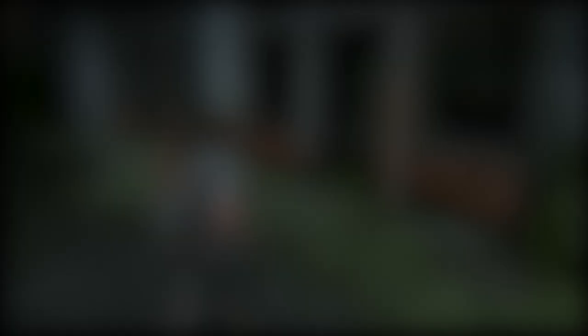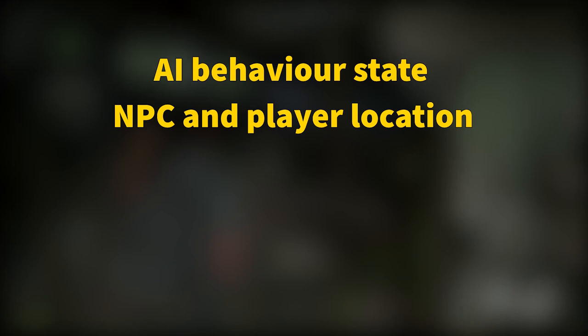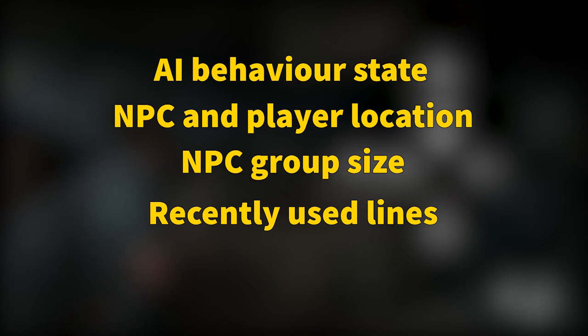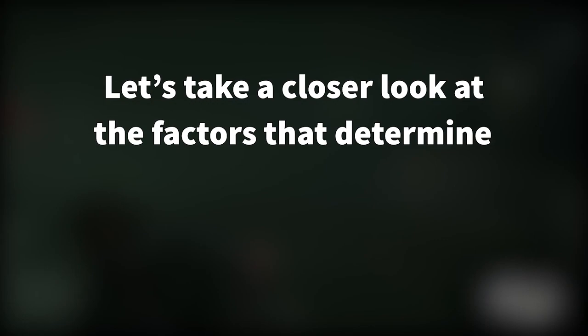Let's run through an example. Imagine a combat encounter where an enemy NPC has run out of ammo. This event triggers a logical line that tells the system what is happening, which sends a request to the dialogue system for a physical dialogue line — the actual voice line. The dialogue system then looks at various factors including the AI behavior state, the NPC and player location, the NPC group size, what lines have been used recently to reduce repetitiveness, and lastly, the priority. The dialogue system will then pick a line based on these criteria and send it into the game engine to play back.